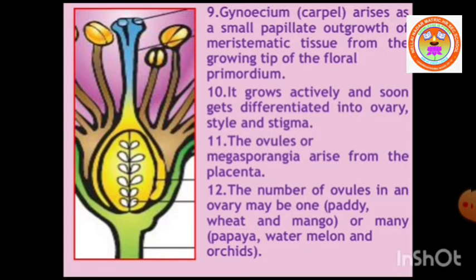It grows very actively and soon gets differentiated into ovary, style, and stigma. The ovules or Megasporangia arise from the placenta. The number of ovules in an ovary may be one — for example, paddy, wheat, and mango — or many — for example, papaya, watermelon, and orchids.